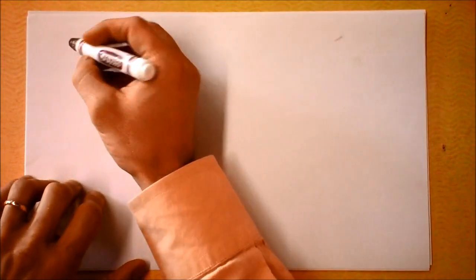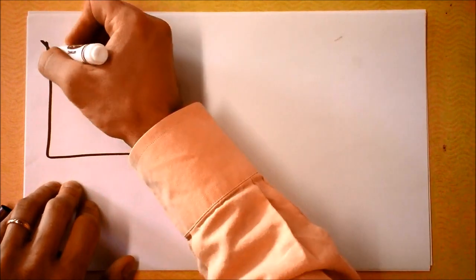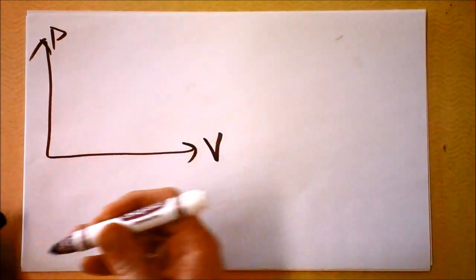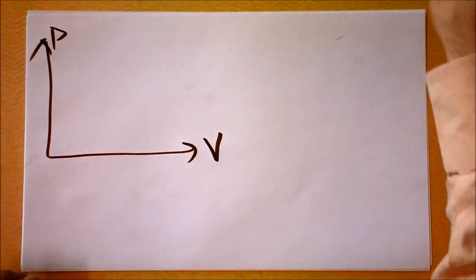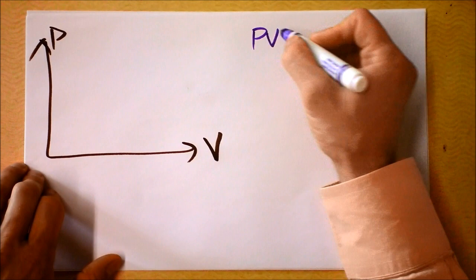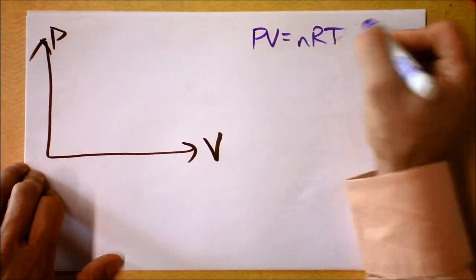There's just one more thing that I want you to know about adiabats. I'm going to get you a pressure volume diagram as usual, and you'll recall that isotherms on this diagram, isotherms always have the same temperature.